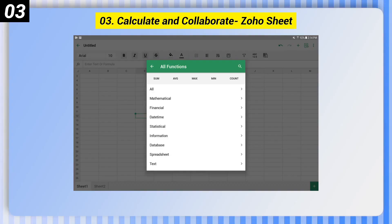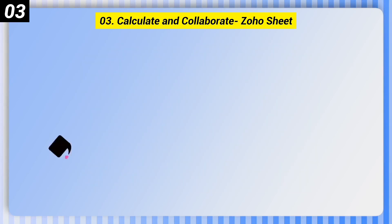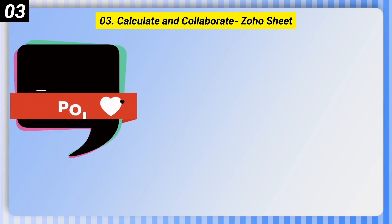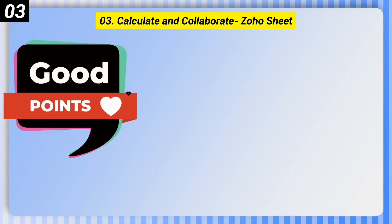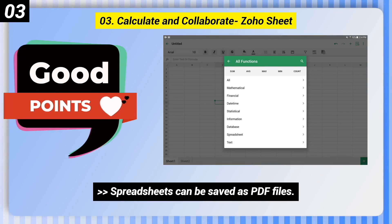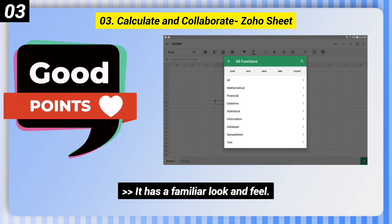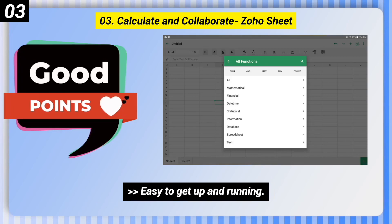Number 3: Calculate and Collaborate — Zoho Sheet. Here are some good points of this one. Spreadsheets can be saved as PDF files. It has a familiar look and feel. Easy to get up and running.